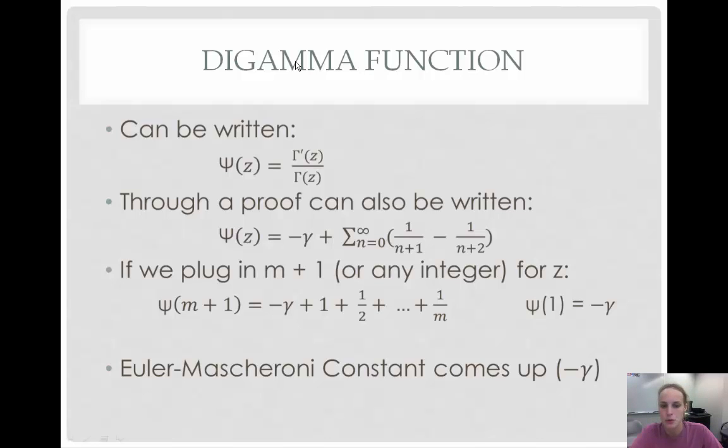Then, like I said, through another proof, you can write it as psi of z is equal to negative little gamma plus the sum from n equals 0 to infinity times the quantity of 1 over n plus 1 minus 1 over n plus z. Now, if we plug in n plus 1 or any other integer for z, we can also find that psi of n plus 1, or any integer, is equal to negative little gamma plus 1 plus 1 half all the way up to the summation of 1 over m.